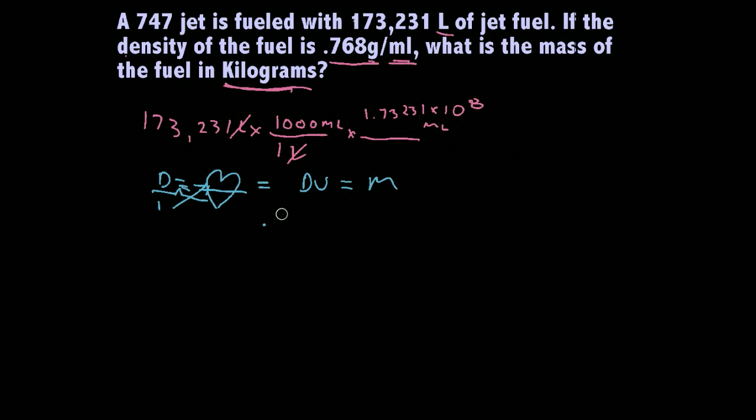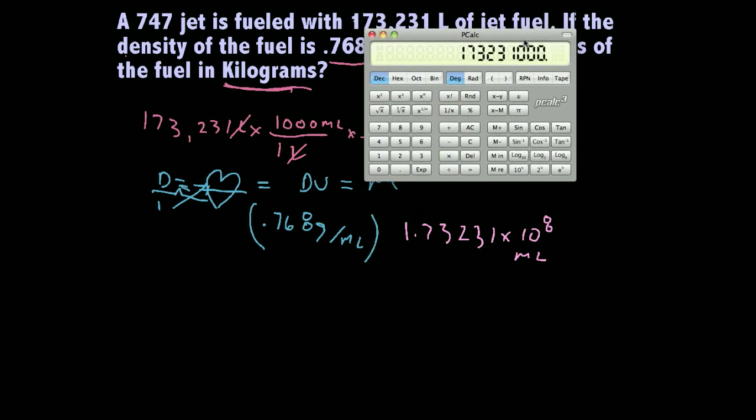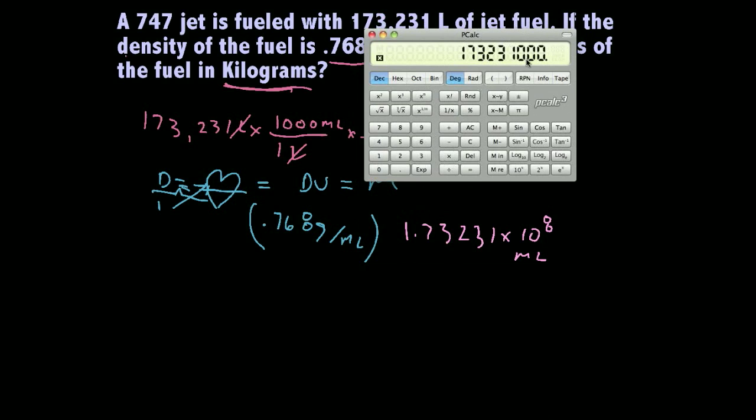So, let's go ahead and start with our density. 0.768 grams per milliliters times our volume, 1.73231 times 10 to the eighth milliliters. And, that's going to equal, I've got it already in there from the previous problem, times 0.768.